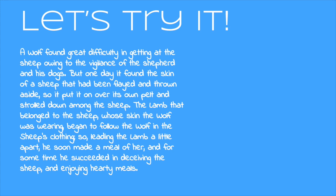I want us to think about the actions and reactions in the story. We already created a timeline for all of the actions in the story, so let's put that up. We know that the wolf had trouble getting to the sheep, the wolf found the skin and put it on, the lamb followed the wolf, the wolf ate the lamb, and finally the wolf ate the other sheep too.